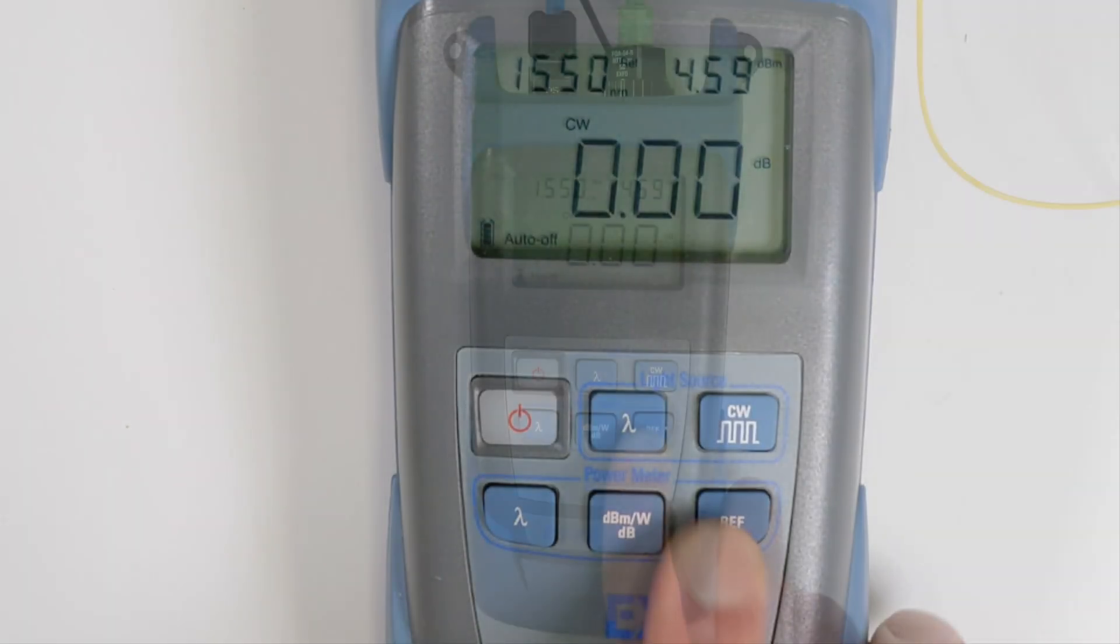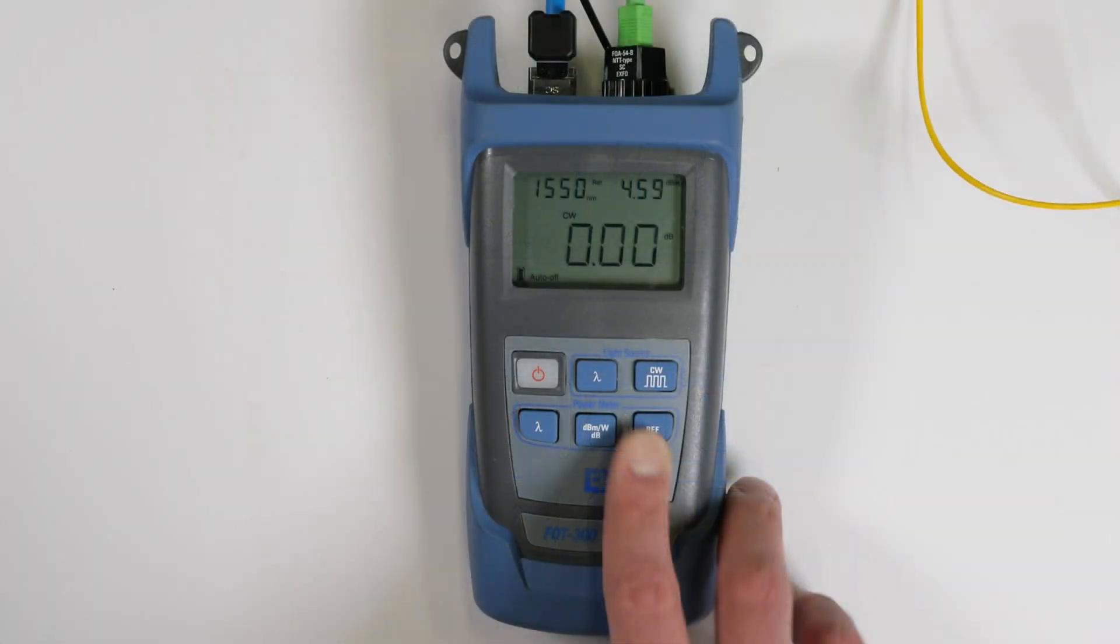The current power reading is displayed. The reference value is subtracted and the display is now back to 0 dB.